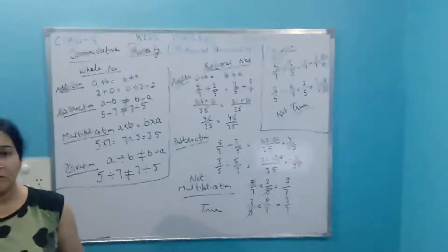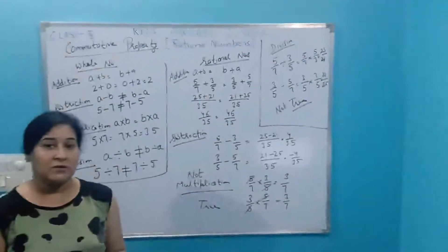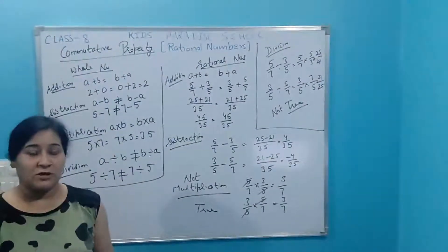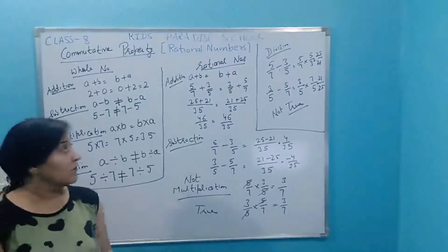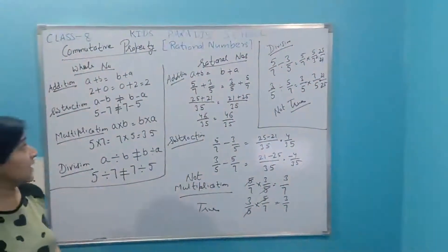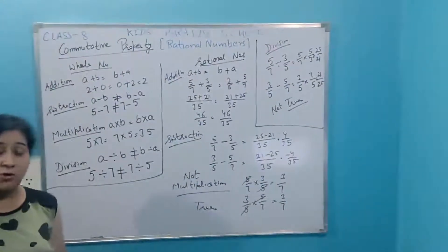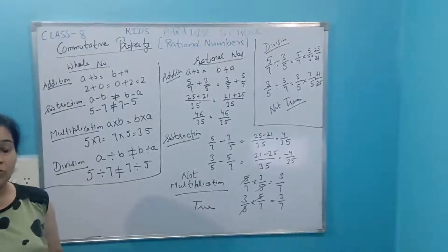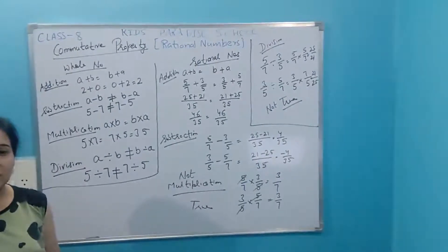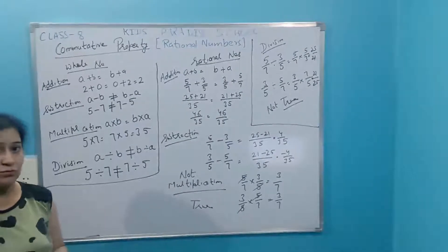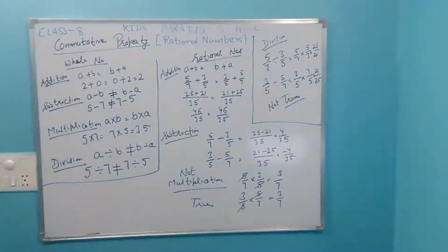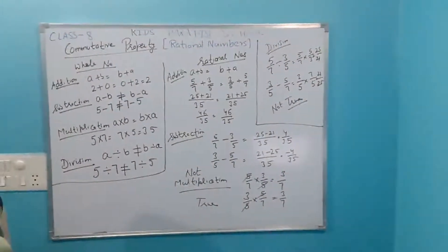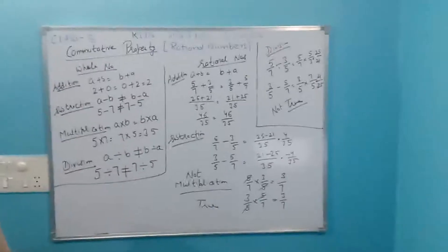Students of class A-L, I am explaining the further properties of rational numbers, whole numbers, and integers. As I have not yet explained all the properties, you don't need to do any exercises yet. Only when all the properties are completed will I tell you when to start the exercise.